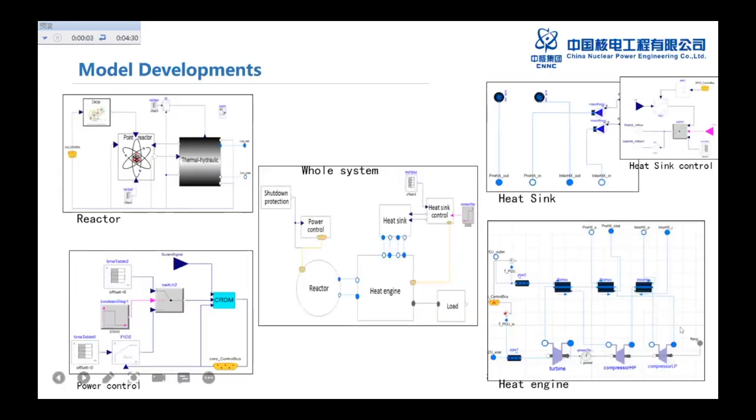Here is the modelica model we developed. It includes the reactors, heating engines, and we use the helium as the coolant. And the helium is heated by the reactor and then enters into the heating engine. The heat engine uses the Brayton cycle helium engine and then the heat converted to the mechanical power.